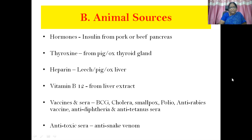Then comes animal sources. Hormones: insulin is isolated from pork or beef pancreas; thyroxine is isolated from pig or ox thyroid gland; heparin from leech, pig, or ox liver; vitamin B12 from liver extract. Vaccines and sera — BCG, cholera, smallpox, polio, anti-rabies vaccine, anti-diphtheria vaccine — all sera are prepared from animal sources. Antitoxic sera like anti-snake venom are also from animal sources.